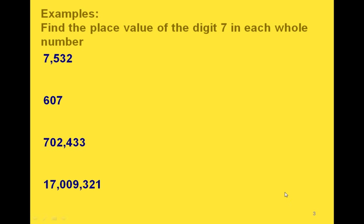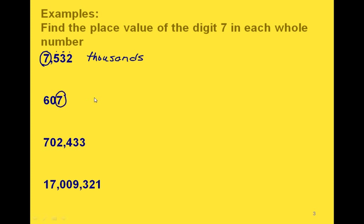Here are some examples. Find the place value of the digit 7 in each whole number. In this first number, if we circle the 7, that's the units place, the tens place, the hundreds place, the thousands place. How about in this one? If we circle the 7, that one is in the ones place.